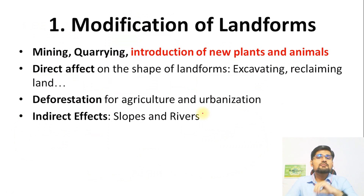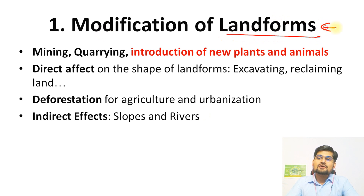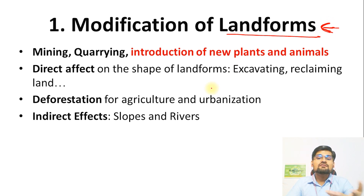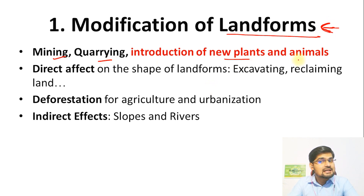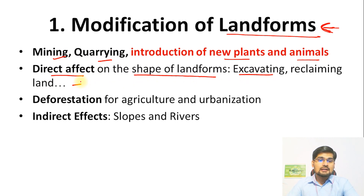There are three important modifications related to the influence of human beings on ecology and environment. The first is modification of landforms. When we say landforms, it's talking about physical geography and geomorphology. This involves the impact of human beings on the physicality and locational aspect of land — like mining, quarrying, introduction of new plants and animals. Some are direct effects like shaping the landforms through excavation and land reclamation.